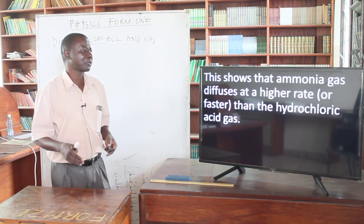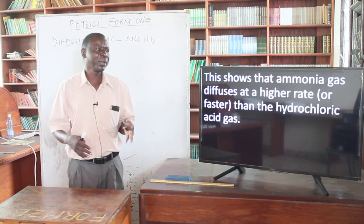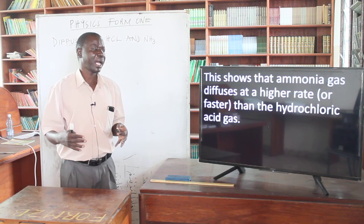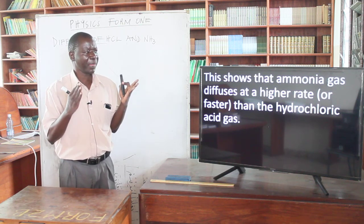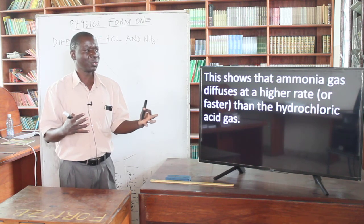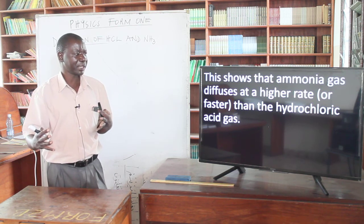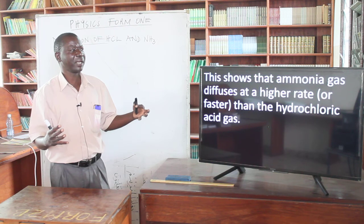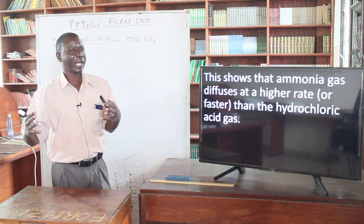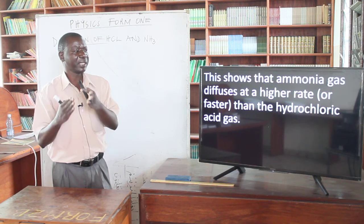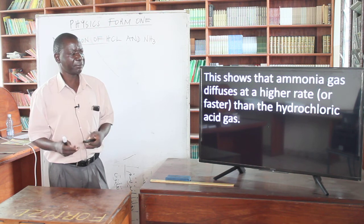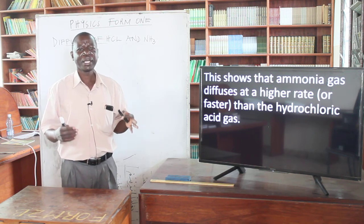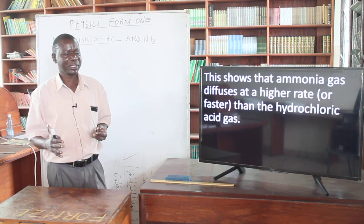What does this actually show us? This shows that ammonia gas diffuses at a higher rate — faster — than hydrochloric acid. Because the white deposit formed by the reaction between the ammonia gas and the hydrochloric acid gas forms closer to the hydrochloric acid region. This means ammonia has traveled very fast while hydrochloric acid has traveled at a slower rate, and they met near the hydrochloric acid end. So ammonia gas diffuses at a higher rate than hydrochloric acid gas.